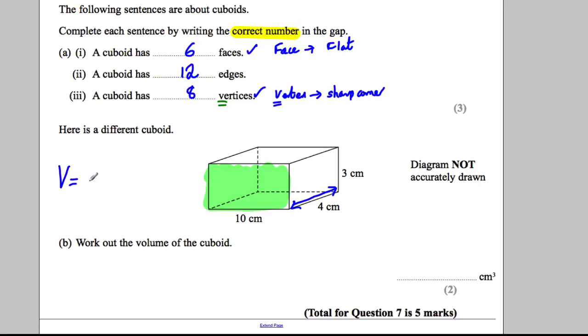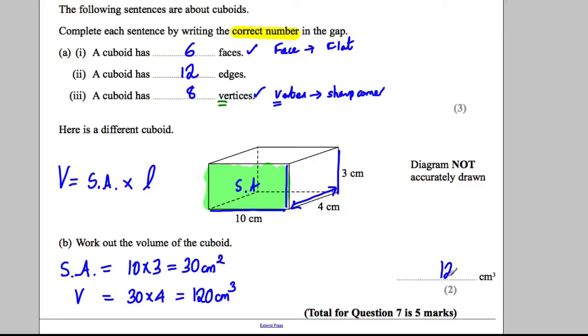So it tells you that the volume is the surface area of the front face, this bit, multiplied by the length back. So let's work out the surface area here. The surface area is going to be, well we've got 10 here and it's 3 high, so it's going to be 10 multiplied by 3, which would be 30 centimeters squared. And therefore the volume is going to be that surface area, which is 30, multiplied by how far back it is, 4. And we're going to get ourselves 120 centimeters cubed. So we could write 120 in there.